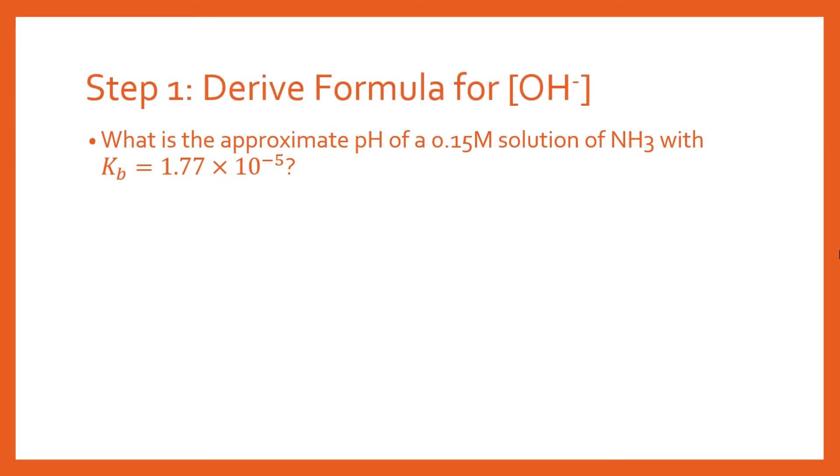We're going to start by deriving a formula for the concentration of hydroxide ions that's going to massively simplify the calculation. We have the basic equation for the reaction between our base B (this is a weak base) and water, which is going to partially dissociate into BH⁺ plus OH⁻.